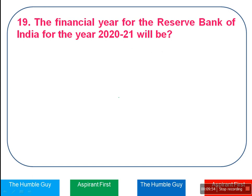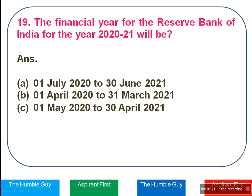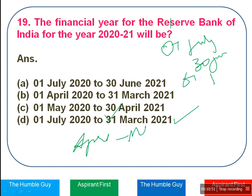The financial year for the Reserve Bank of India for 2020-2021 will be — this is an RBI-related question. The options are: 1st July 2020 to 30th June 2021, 1st April 2020 to 31st March 2021, 1st May 2020 to 30th April 2021, or 1st July 2020 to 31st March 2021. The correct answer is Option D — 1st July 2020 to 31st March 2021. RBI previously followed 1st July to 30th June. This time they decided the financial year will be only 9 months — from 1st July to 31st March 2021 — so it aligns with the standard April-March financial year.